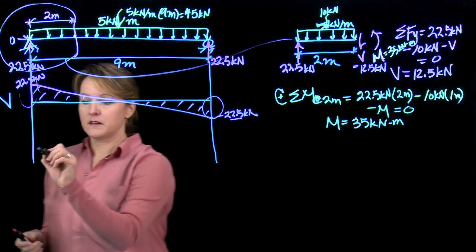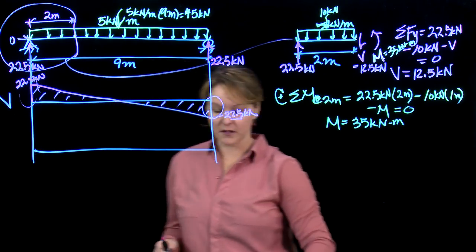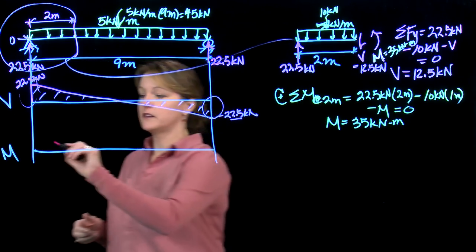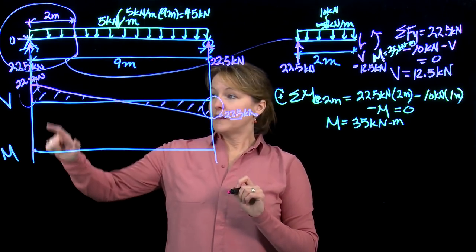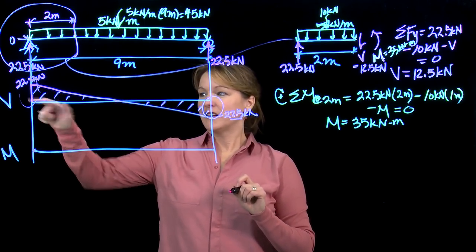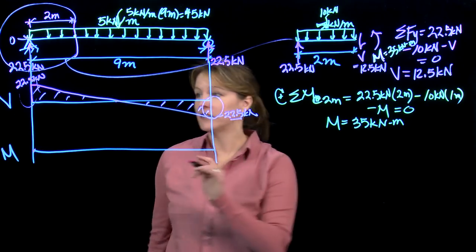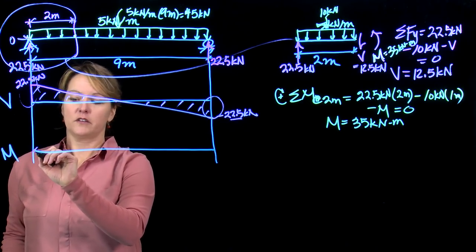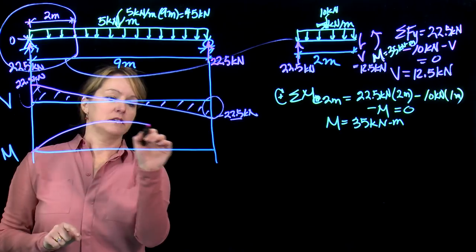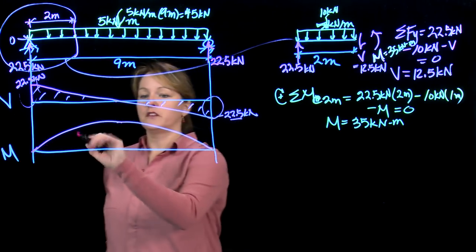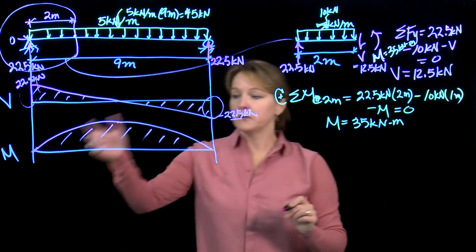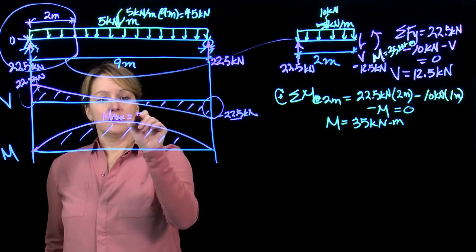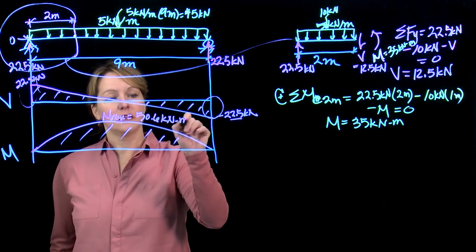Now let's look at the moment. For this beam, I expect the moment to be more critical. The moment always starts at zero. The slope of the moment diagram equals the shear value, and the area under the shear diagram equals the moment value. The diagram's going to start at zero, have a certain slope, come up to a maximum in the middle, and then go back down to zero. That should be symmetric on both sides. The maximum is right here at the middle, which is 50.6 kilonewton meters.